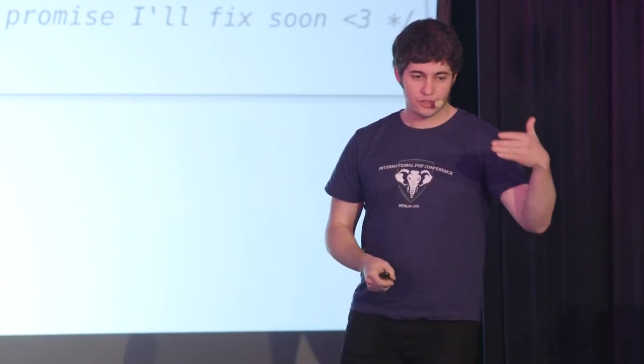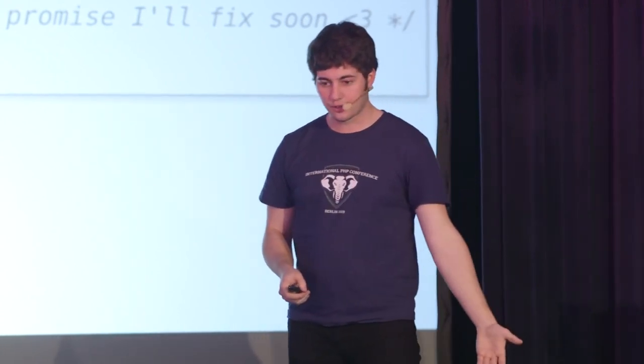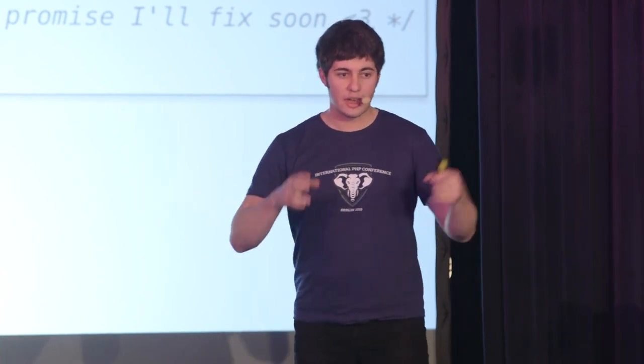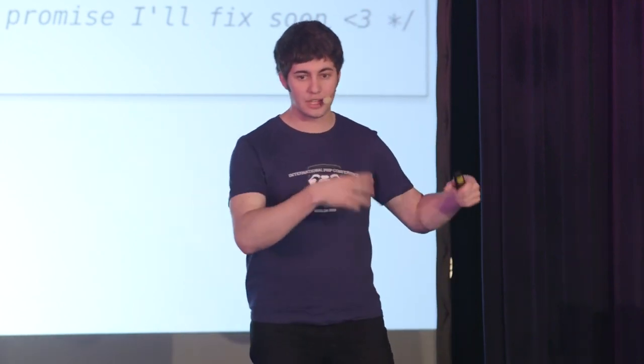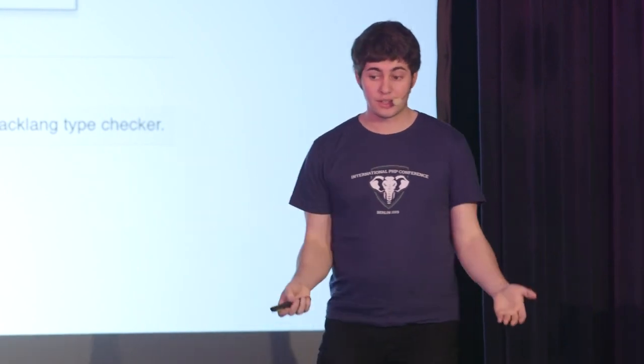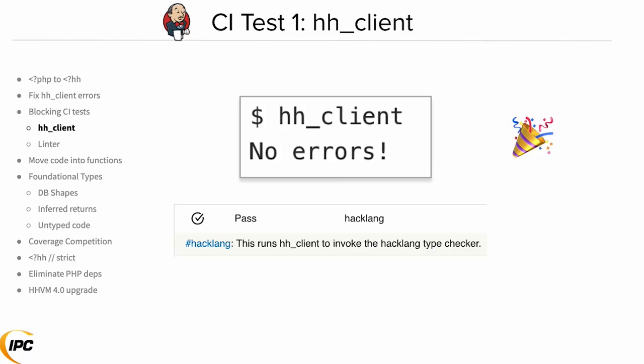We used those three strategies to get rid of all the Hack errors and committed the code incrementally — Hackify some files, and once they're passing the type checker, commit them, then keep doing that incrementally across the code base. We did this with a CI setup and continuous integration test running the type checker, so we would not commit any code that doesn't pass. In this way, we were able to slowly and gradually migrate all of our code to be conformant Hack.